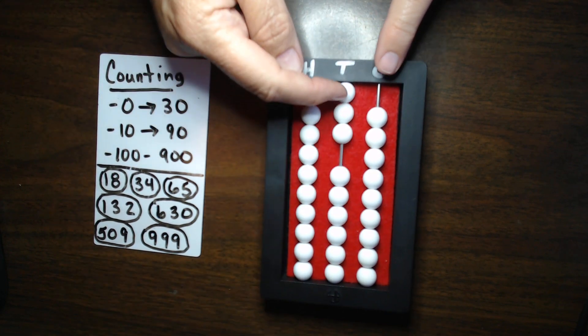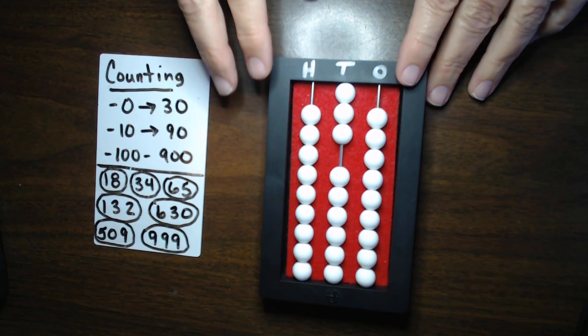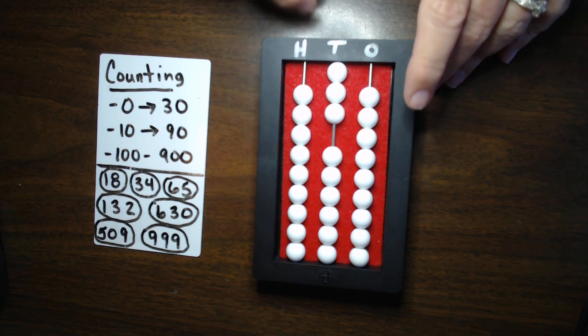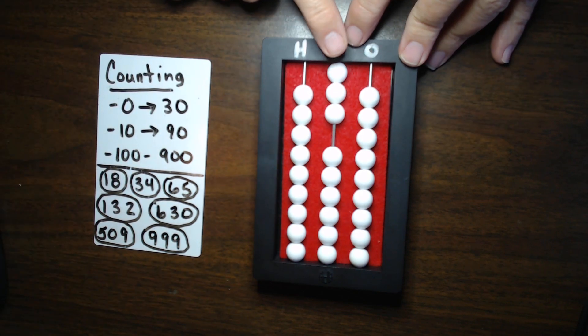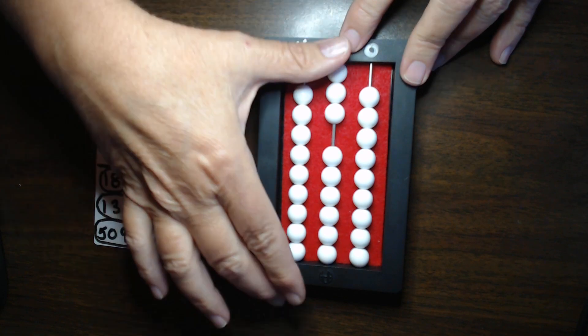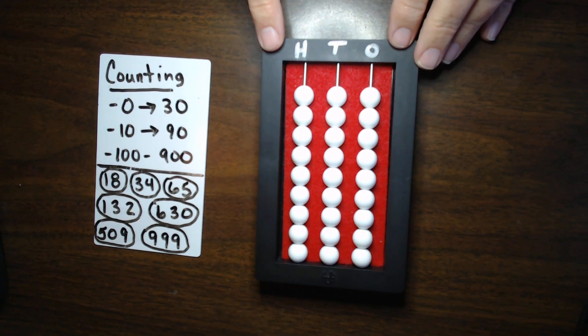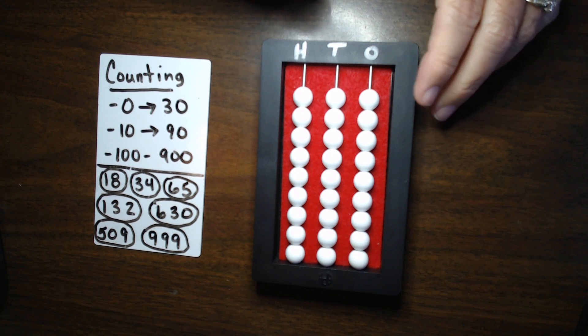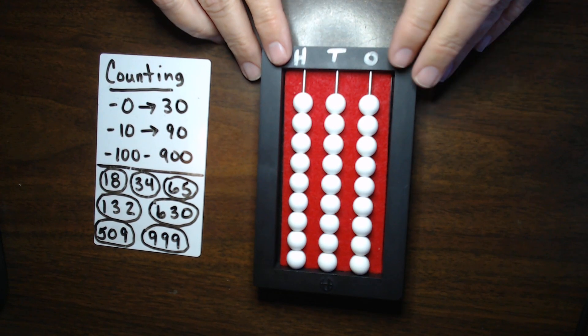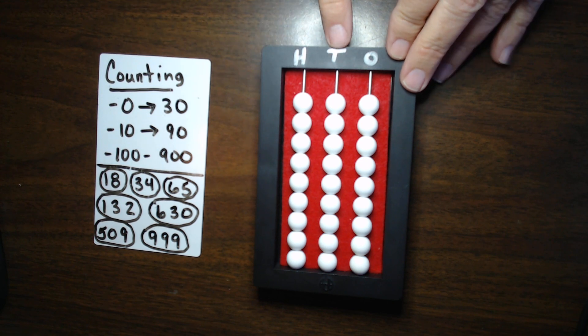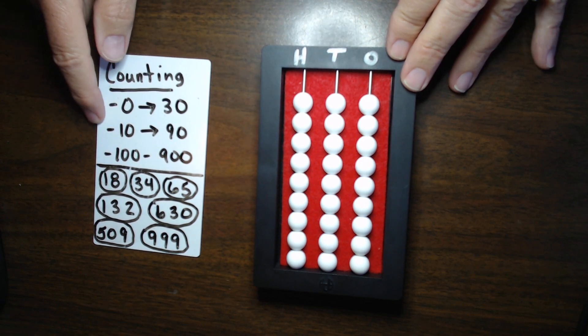Every time I get to 9, I push a 10 bead up and clear the 1s column. And we can continue doing that, and so on and so forth. I will not make you listen all the way to 999. So, let's clear this for a minute. Now, if I wanted to set the number 30, that would take a long time to count each bead, and you could get all the way to 30.